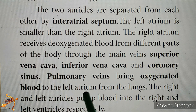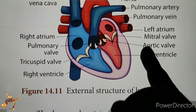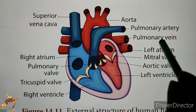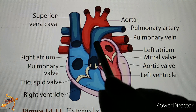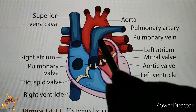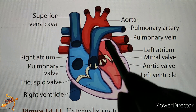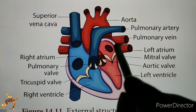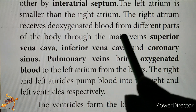Pulmonary veins bring oxygenated blood to the left atrium from the lungs. The blood coming through the pulmonary veins is oxygenated blood, and it enters the left atrium.